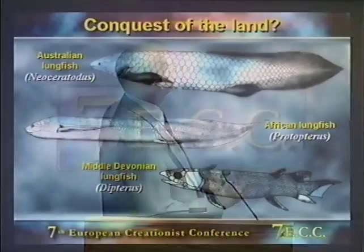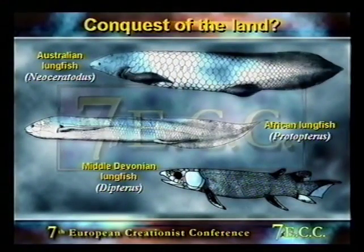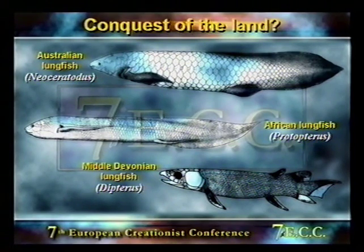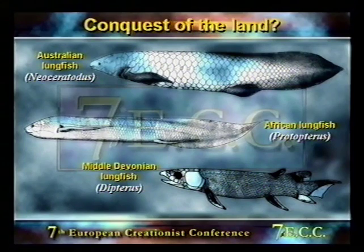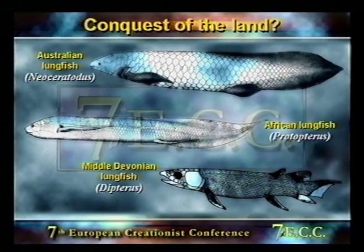Now let's think about the search for the ancestors of these creatures. These are thought to be the first land animals, so what about their ancestors? We can trace the controversy back to the mid-19th century when lungfishes were first described. South American and African lungfishes were first brought to Europe in 1837.